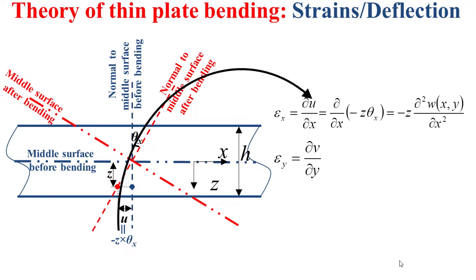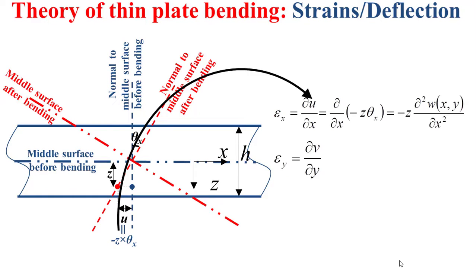Similarly, the strain along y, denoted by epsilon y, which is the variation of the y component of the displacement v along the y direction, is determined as minus z multiplied by the second derivative of the deflection along the y direction. Epsilon x and epsilon y represent the normal strains along the x and y directions, respectively.